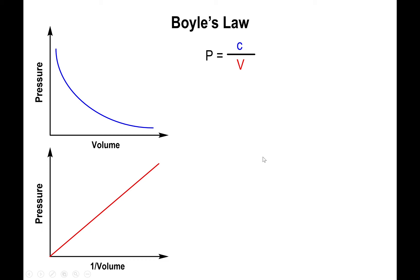I'm going to isolate for the slope of the line by multiplying both sides by the volume. Now we have pressure times volume equals the slope. Since this relationship is linear, the slope is guaranteed to be constant.